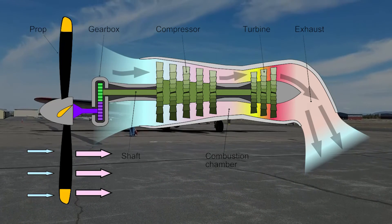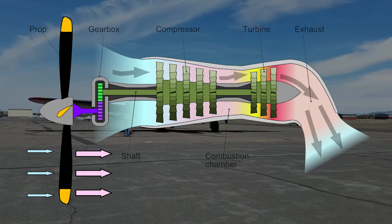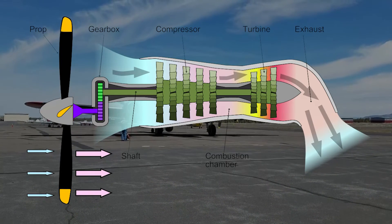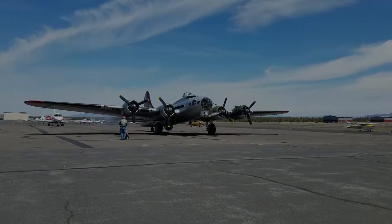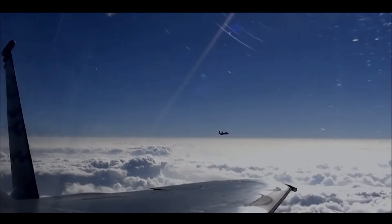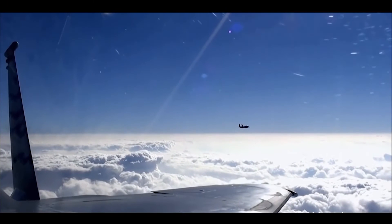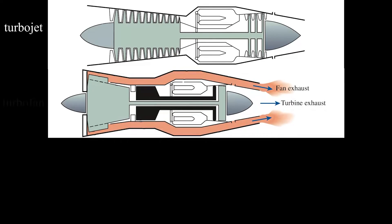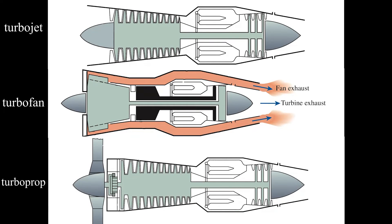Turboprops burn less fuel per passenger for the same amount of flying time, making them more cost effective compared to turbojets. In addition, turbojets work better at higher altitudes due to the fact that turbofans and turboprops get some of their thrust by accelerating cold air and pushing it out at the back of the engine. So as the aircraft gets higher, the thin air cannot produce enough thrust only by being accelerated.